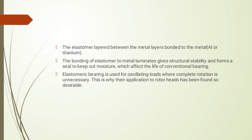आप खुद imagine करिए जो hinge हमारे door में लगा हुआ है — वह एक particular angle तक खोलता है। Similarly, elastomeric bearing भी एक particular angle तक ही movement देगा — यह पूरा circular rotation नहीं देगा, unlike roller bearings जो shaft में लगे होते हैं और rotate होते हैं। यह oscillating load के लिए use किये जाते हैं, जहाँ rotation unnecessary है — hinges को replace करके elastomeric bearing का इस्तमाल किया जाता है।